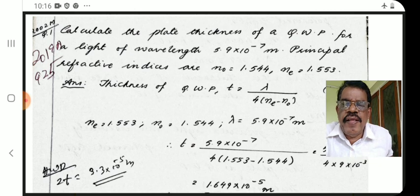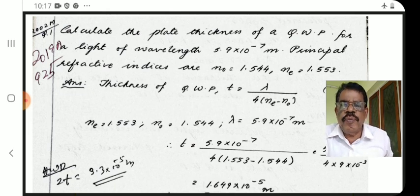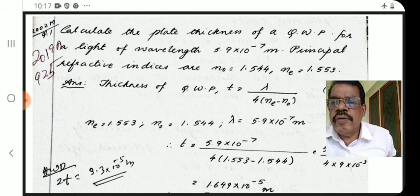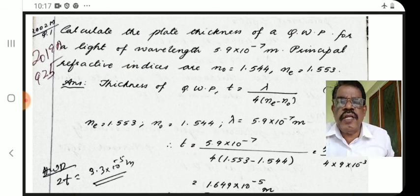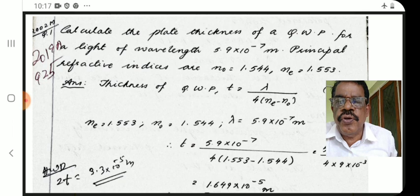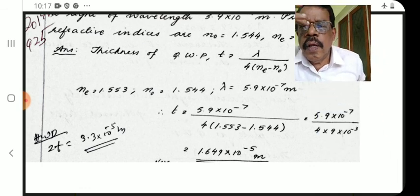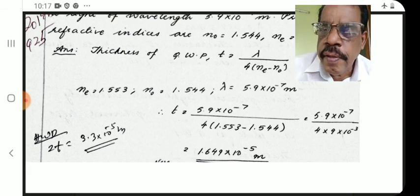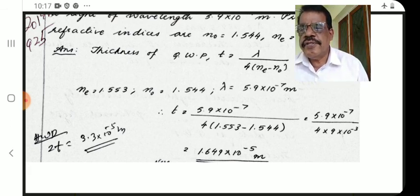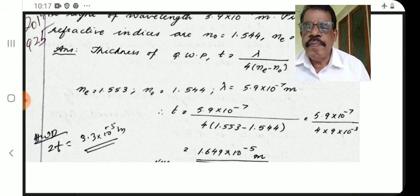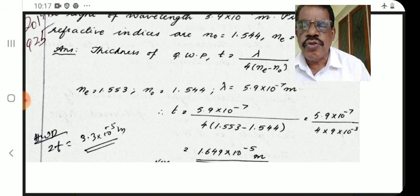Given: ne = 1.553, no = 1.544, λ = 5.9 × 10⁻⁷ meter. Therefore, thickness t = λ / [4(ne − no)] = 5.9 × 10⁻⁷ / [4 × (1.553 − 1.544)]. The answer is t = 1.6 × 10⁻⁵ meter (approximately).